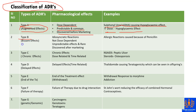Type B stands for bizarre effects, which are idiosyncratic reactions. These are not dose dependent, unpredictable, rare, and are discovered after marketing. An example would be allergic reactions caused by penicillin.